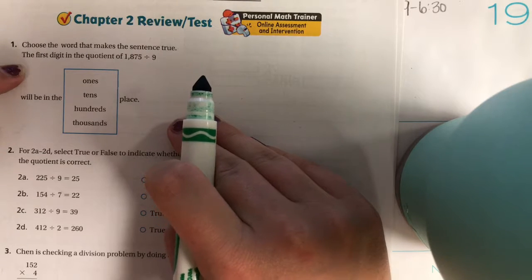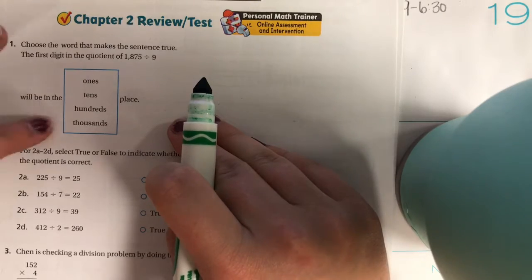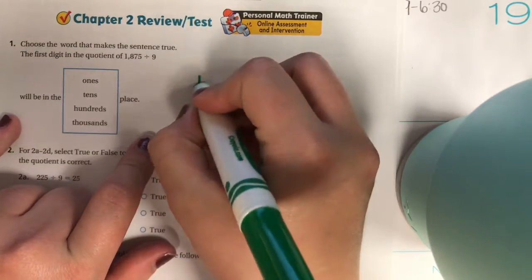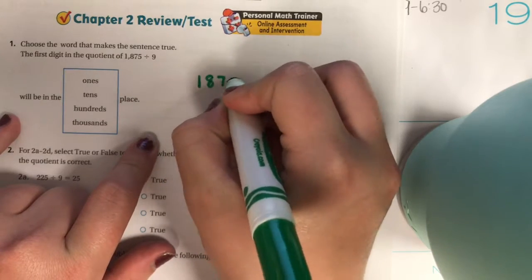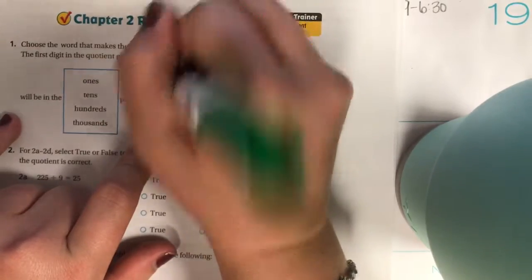The first digit in the quotient of 1875 divided by 9 will be in the blank place. So my way to solve this would be to actually take my 1875 divide by 9.